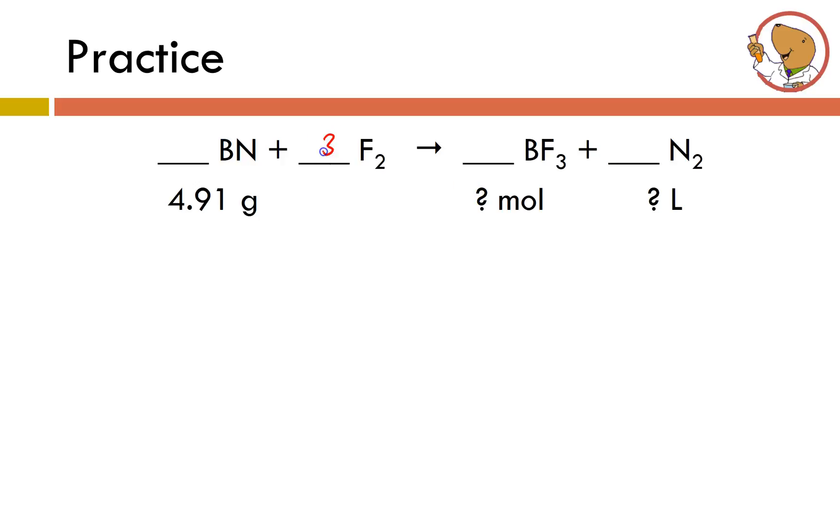So I'll start with fluorines. Put a three there. I'll give me six fluorines. I got six fluorines on the product side. I've got two borons on the reactant side and the product side and one N2. I'm balanced. I'm told that I'm starting with 4.91 grams of boron mononitride and I'm interested in trying to figure out how many moles of BF3 I can produce and how many liters of N2 can be produced. So I'm going to start with 4.91 grams of boron mononitride. I'm going to try to convert that into moles. So I need to find the molar mass of BN. And it turns out that one mole of BN has a molar mass of about 24.8 grams. I'm going to be very specific about what substance I'm talking about. I'm going to be able to cancel.